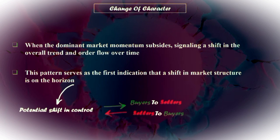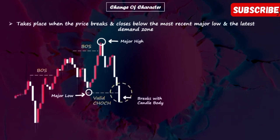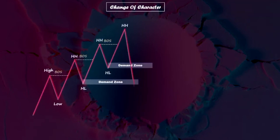Now let's see how we can identify a valid change of character in the bearish scenario. The change of character takes place when the price breaks and closes below the most recent major low and the latest demand zone. The same concepts apply to the bullish scenario. We see that the price was in an uptrend, consistently forming a series of bullish structure breaks. However, a shift in market structure occurs when the price breaks through the most recent major low and demand zone, signifying the first change of character.